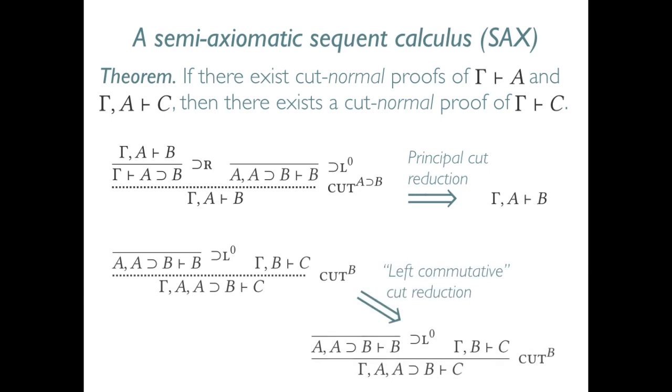We call it a left commutative cut reduction because it is very vaguely related to the kind of left commutative cuts that occur in G3. What happens then when this normal proof occurs in the second premise of a cut?